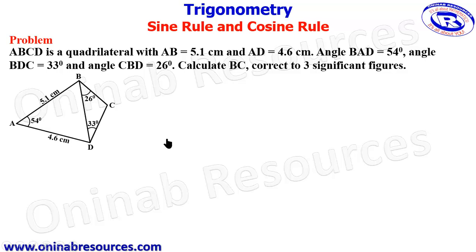We have the problem here. ABCD is a quadrilateral with AB equal to 5.1 centimeters, this is the AB, 5.1 centimeters, and AD equals 4.6 centimeters, AD 4.6 centimeters.